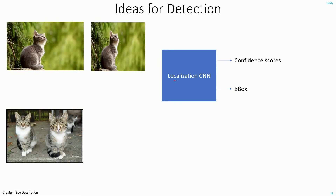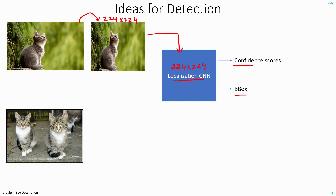In the last video, we saw how to do localization using Convolutional Neural Networks. One important detail is that CNNs, whether AlexNet or VGGNet, need a fixed size input — images of 224 by 224. So while doing localization, irrespective of the size of the image, you have to resize it to 224 by 224 and give it as input to your localization network. The network will then output a confidence score and a bounding box — for example, the confidence score for a cat may be around 85%.